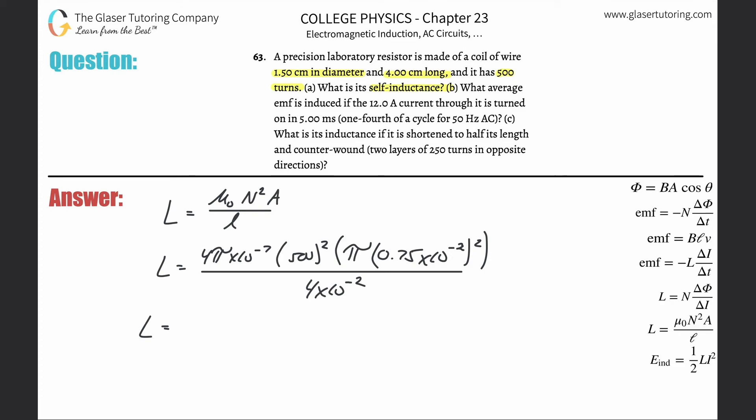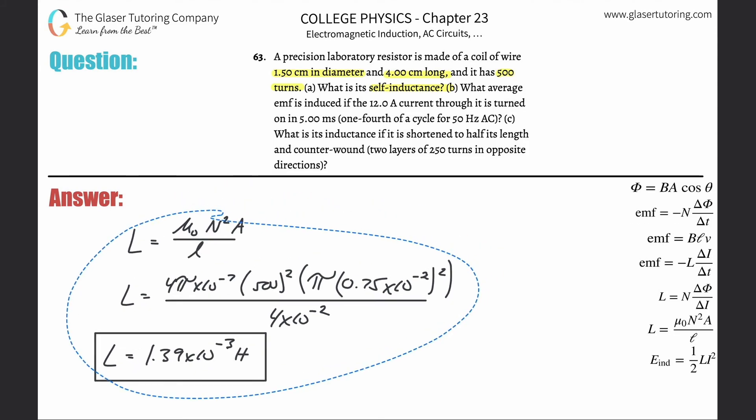1.39 × 10⁻³ henrys, or about 1.39 millihenrys. That takes care of Part A. Fairly straightforward.